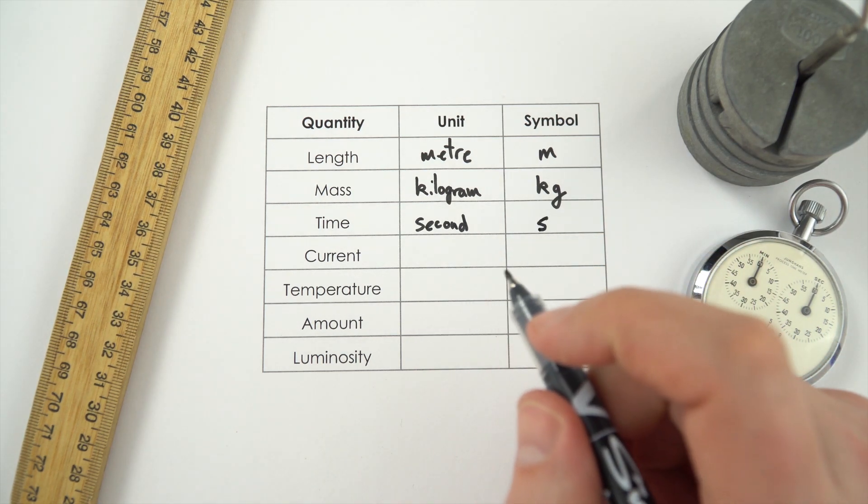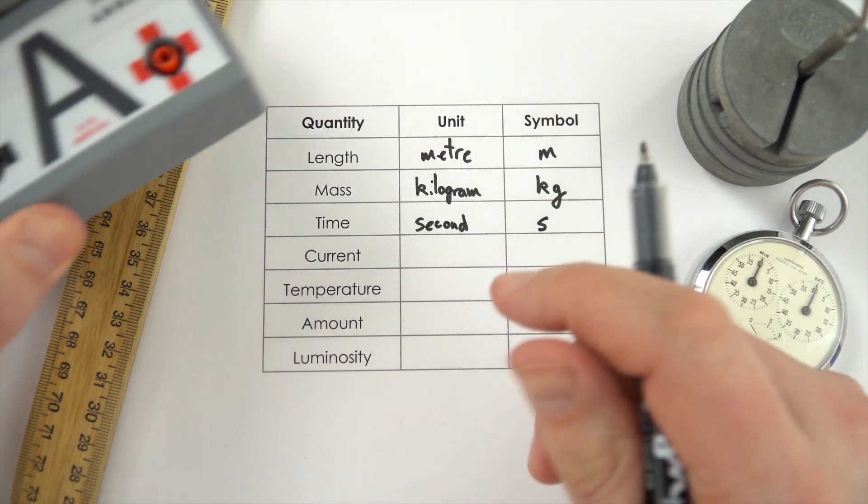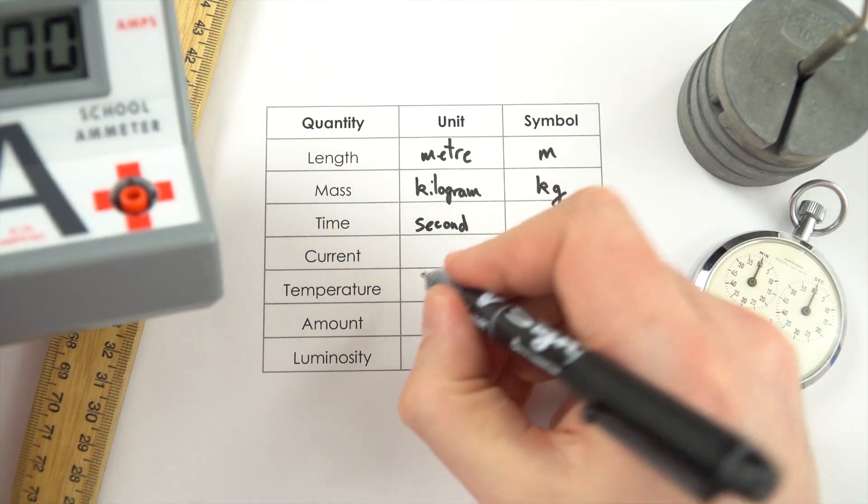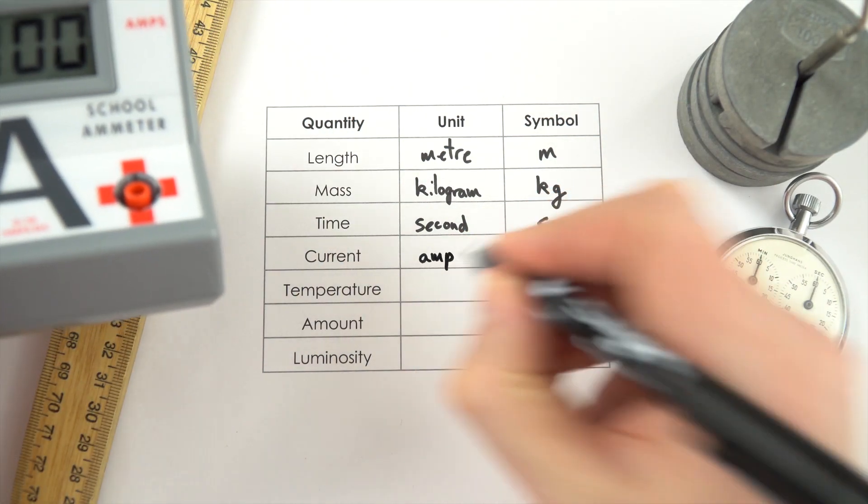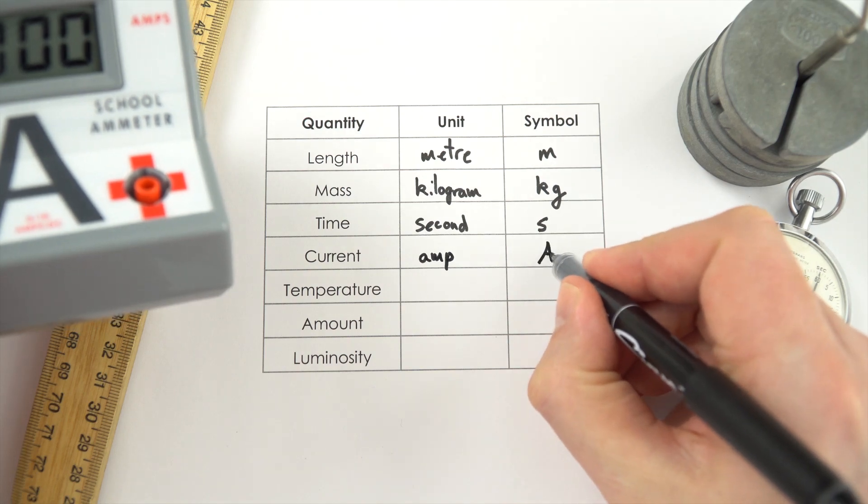We then have electric current. Now the unit for this is the ampere. Although we just always call it the amp I suppose. And the symbol for that is a capital A.